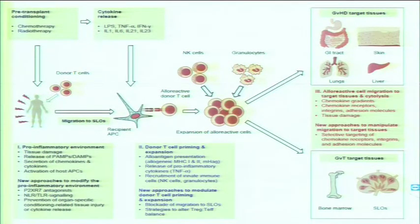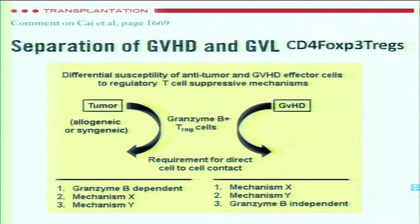Can we separate GVHD and GVL? This is something we would love to do. Currently, we do not have good ways of separating them. There is a paper in Transplantation suggesting that the type of T cell response in graft-versus-host disease differs from that in graft-versus-tumor, and that it may be possible to manipulate this difference to achieve GVL without GVHD.